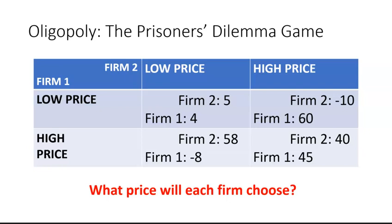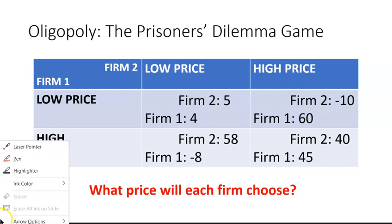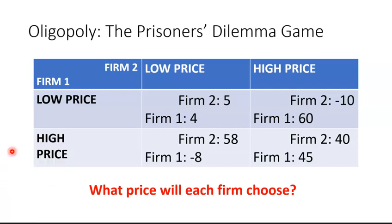We have the same sort of description in this case that we had in the previous example, except instead of having two individuals choosing a strategy, we've got two firms. I'm going to suppose that we've got an oligopoly that has just two firms in it — a special case called a duopoly. Each firm has a choice of only two different strategies, that is, two different prices that it could set.